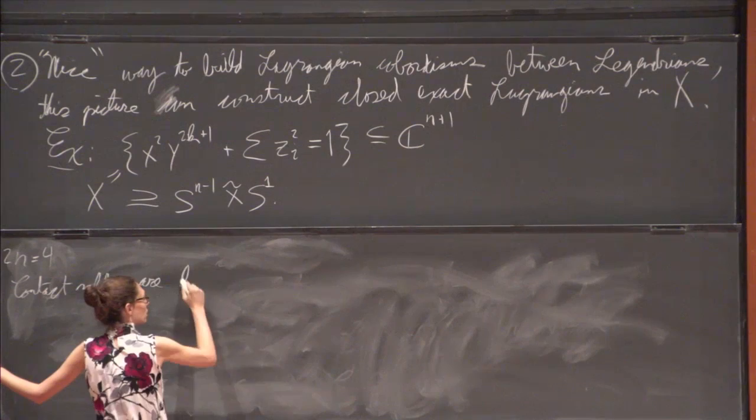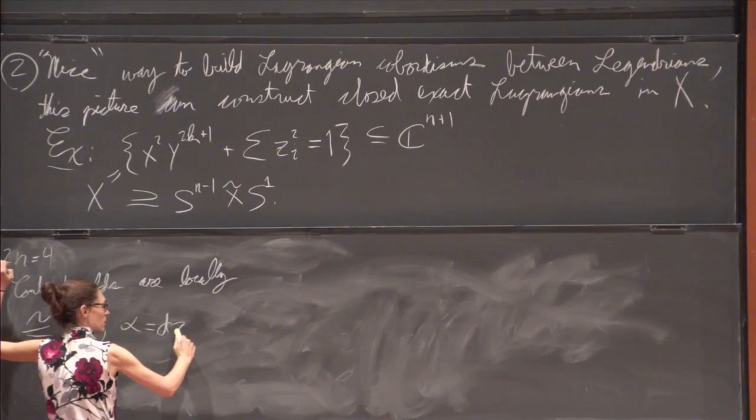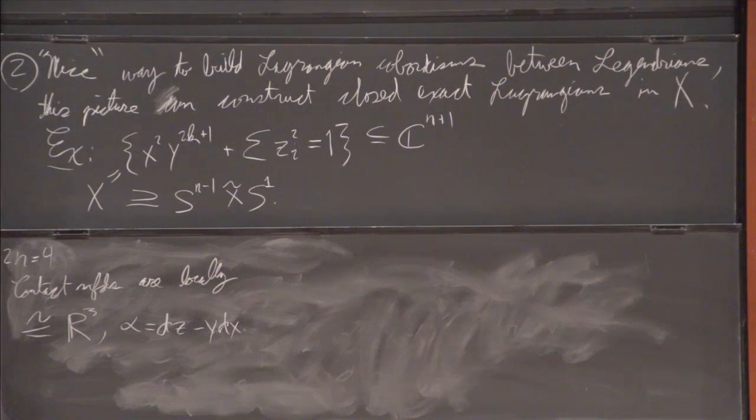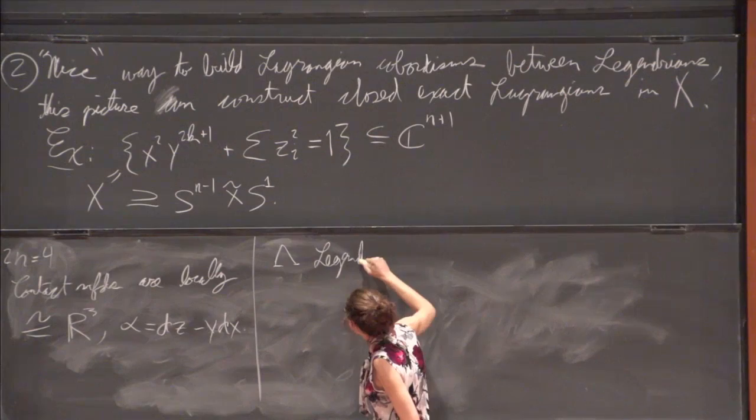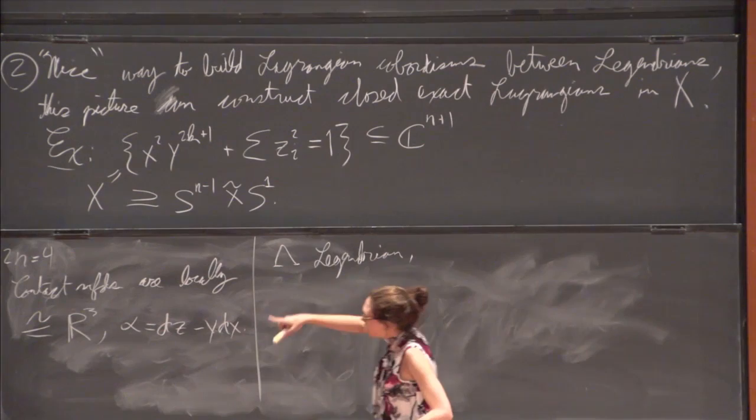Contact manifolds, the contact manifolds are going to be locally equivalent to R^3 with the contact manifold given by dz minus y dx. And we kind of like this picture quite a lot.